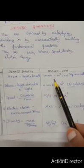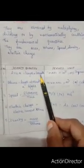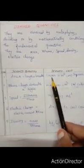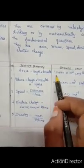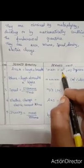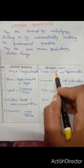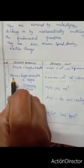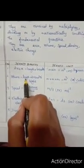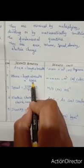The formulas are given here. To find area, we multiply length into breadth — that gives the derived unit m² or square meter. To find volume, we multiply length, breadth, and height, and the derived unit of volume is meter cube or cubic meter.